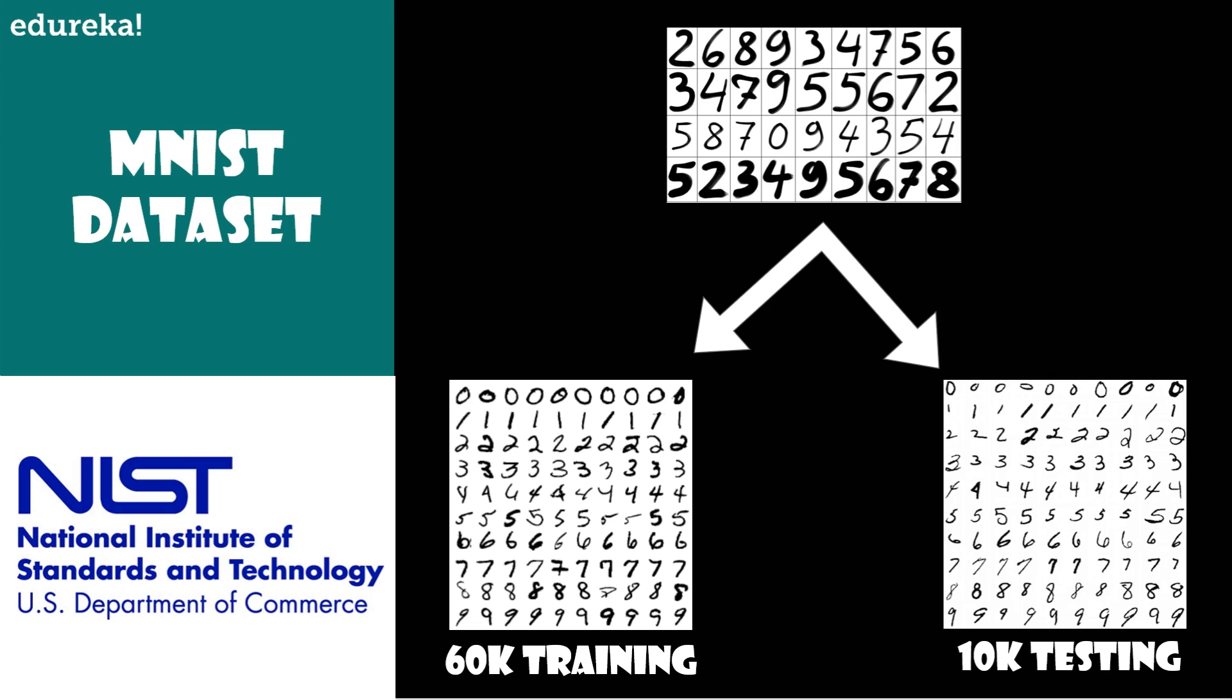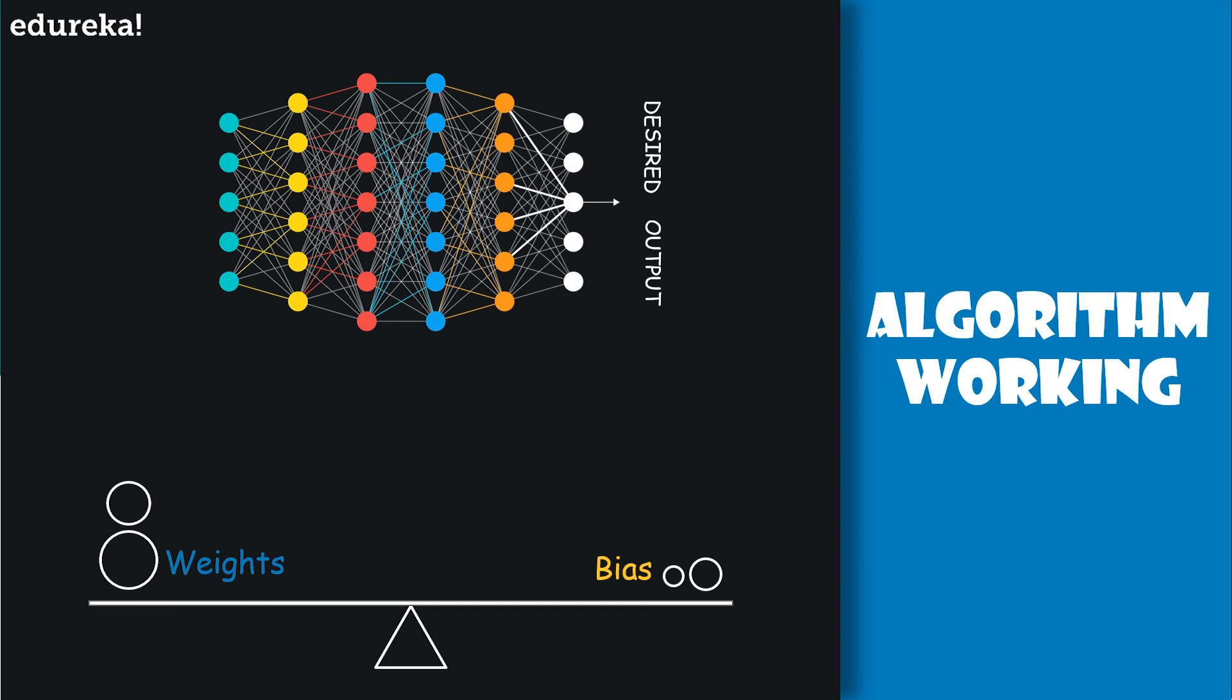The second part of the MNIST dataset is 10,000 images to be used as the test data. Again, these are 28 by 28 grayscale images. What we would like is an algorithm which lets us find weights and biases so that the output from the network approximates to the desired output for all the training inputs.